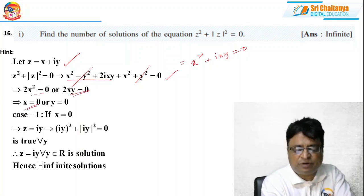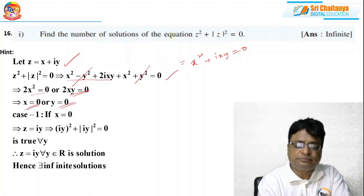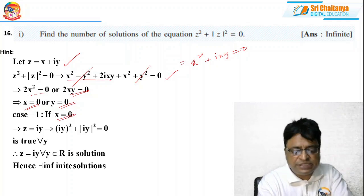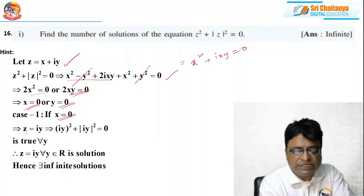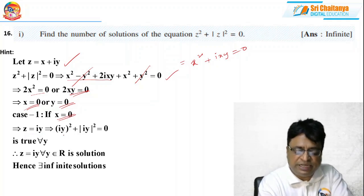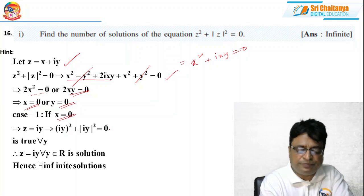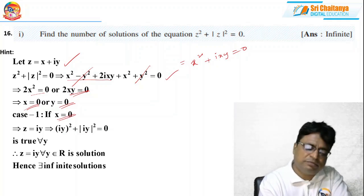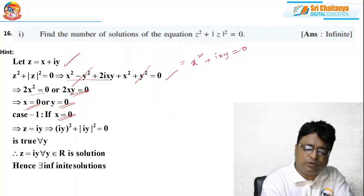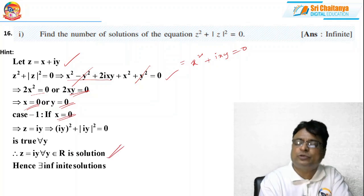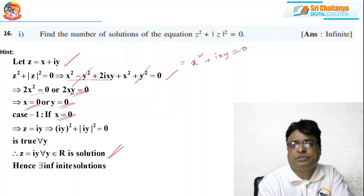From x² = 0 we get x = 0, or from 2xy = 0 we get x = 0 or y = 0. Case 1: suppose x = 0, then z = iy. Substituting iy into the equation: (iy)² + |iy|² = −y² + y² = 0. This is true for every y. So z = iy for every y ∈ ℝ is a solution — infinitely many solutions.